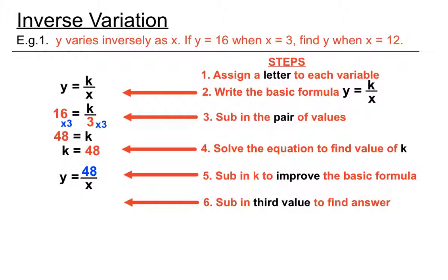Our last step is to sub in that third value. The last number mentioned was X equals 12, so we're going to replace the X with 12 and find out what Y is. 48 divided by 12 is 4, and we found Y when X equals 12. We're still subbing in the pair of values, solving to get k on its own, improving the formula, and finding that third value to get our answer.